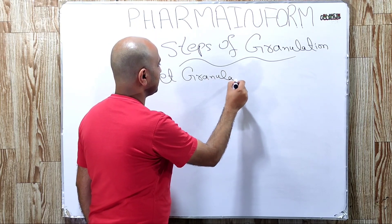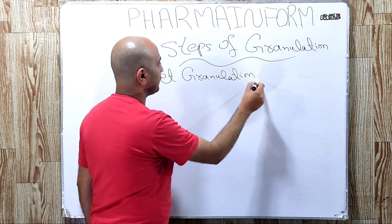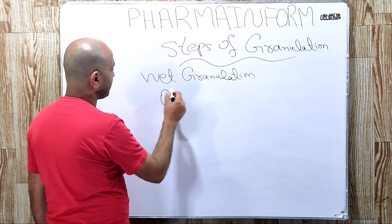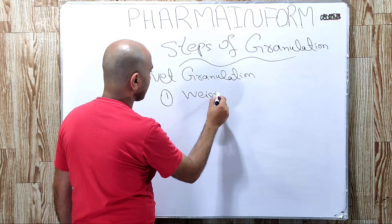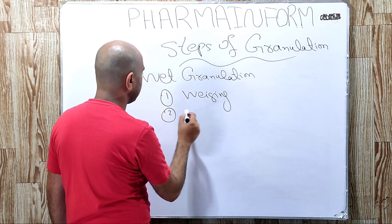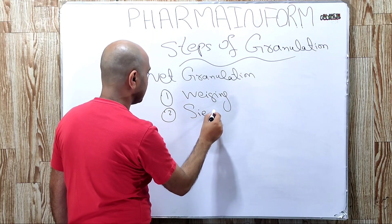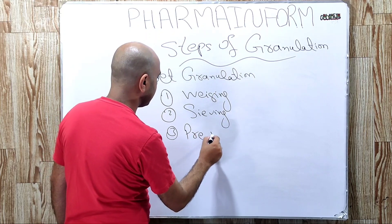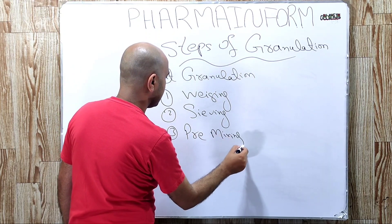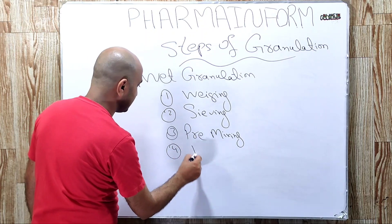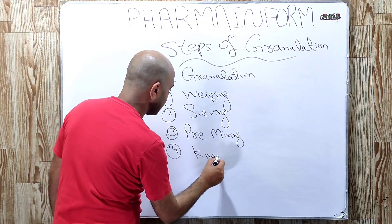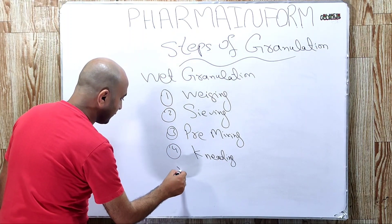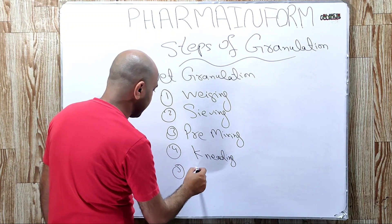Steps of wet granulation — it is a very important question which is asked in interviews and vivas. The first step is weighing, the second step is sieving, the third step is premixing, and the fourth step is kneading, which is also known as wetting.